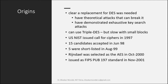US NIST issued a call for a cipher in 1997, which was an open competition. Fifteen candidates were accepted in June 1998. Five of them were shortlisted in August 1999, and Rijndael was selected as AES in October 2000. Finally, with a little modification, it was published in FIPS publication 197 in November 2001.